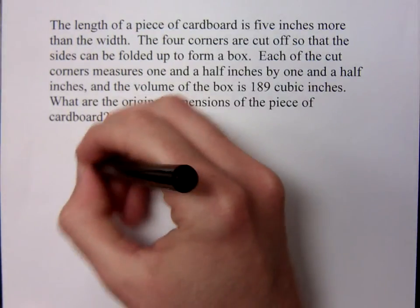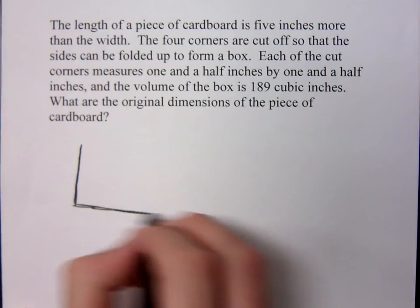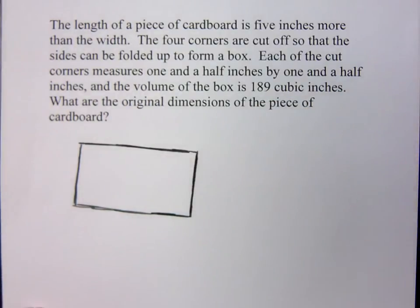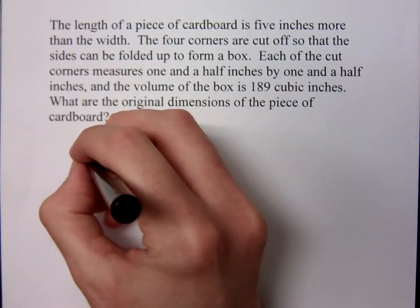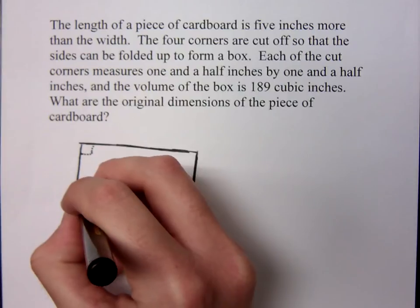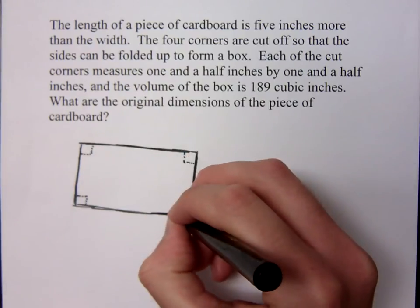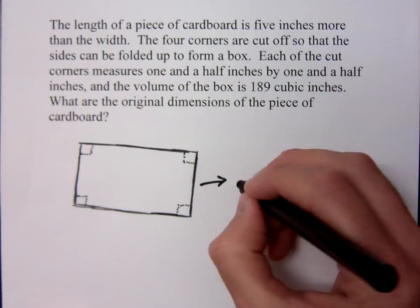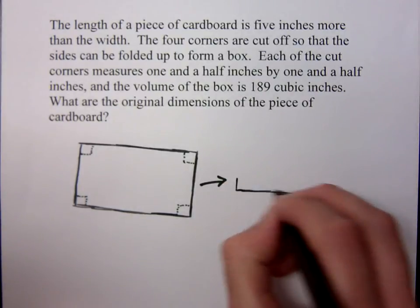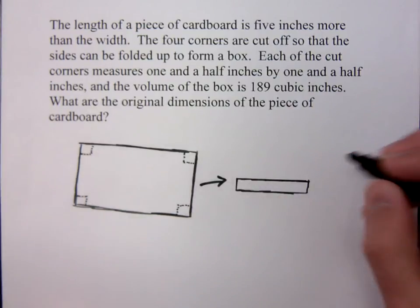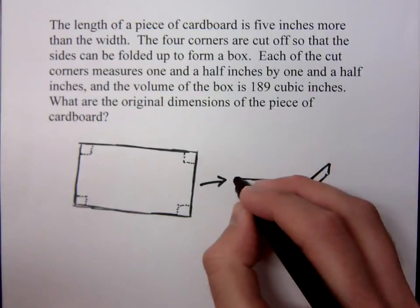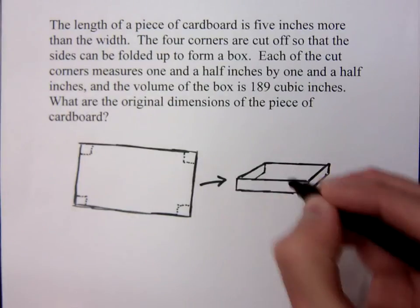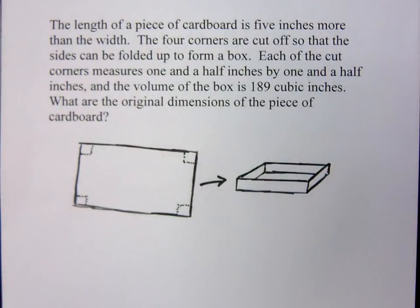So if you take a rectangle, here's my rectangle. Basically what you're doing is cutting off corners right here. Now understand that these corners must be squares or you can't really make a box that looks right after this. So you've got to cut these corners off and then you end up with something that looks like this.